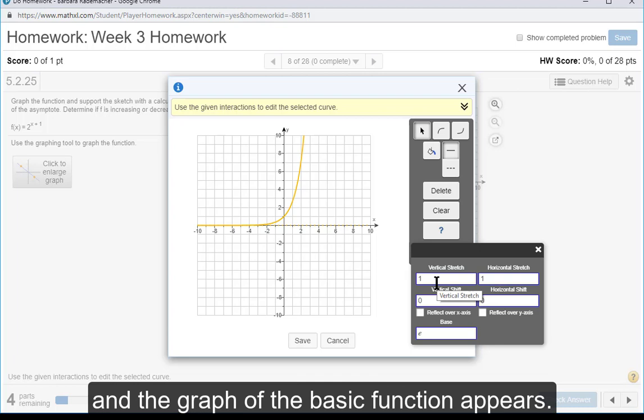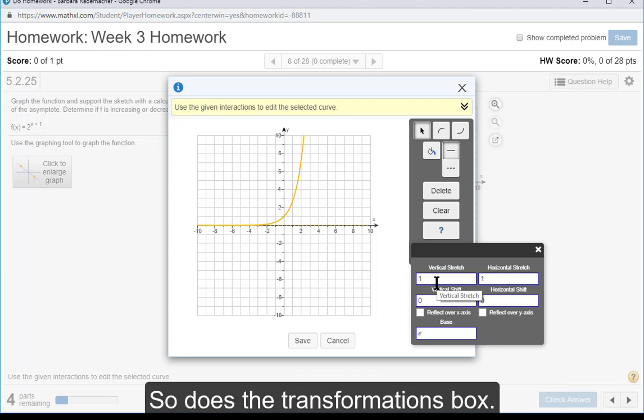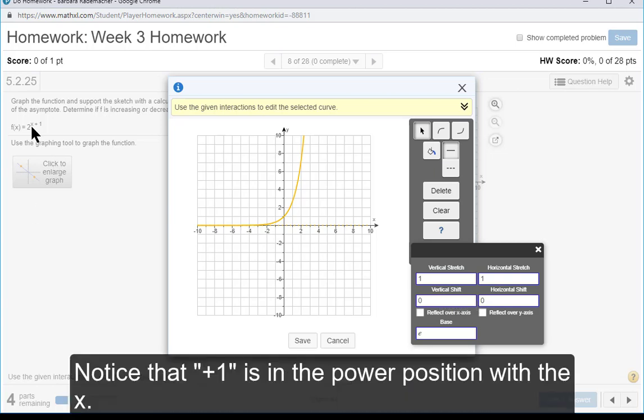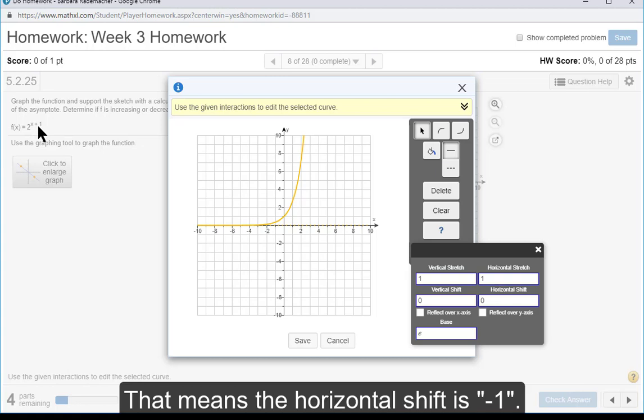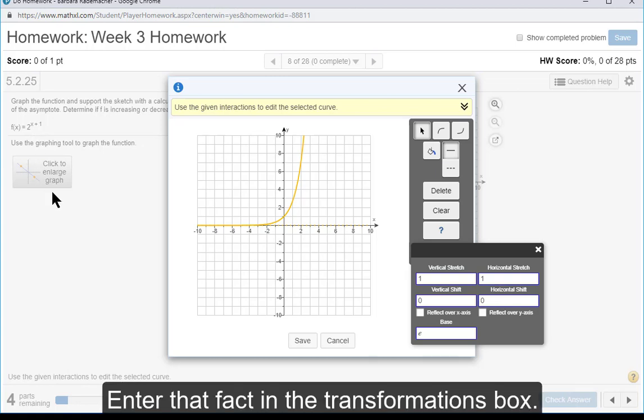The graph and the basic function appears, and so does the transformations box. Notice that the plus 1 is in the power position with the x. That means the horizontal shift is negative 1 to the left.